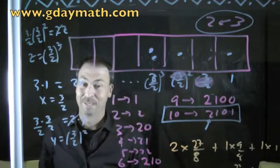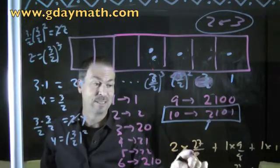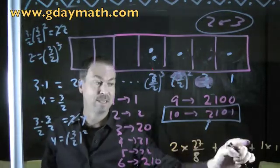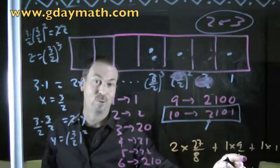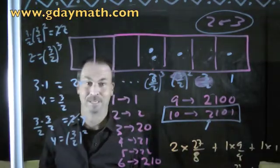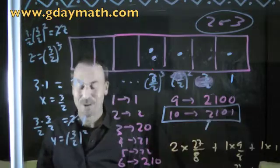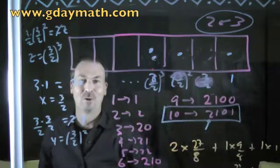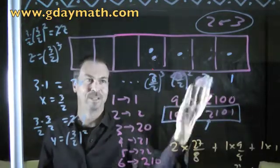Well do the arithmetic. Two times 27 eighths, that's 27 fourths, plus nine fourths. That's 36 fourths, that's nine, plus one is 10. Amazing.